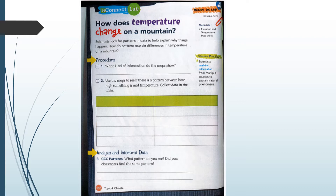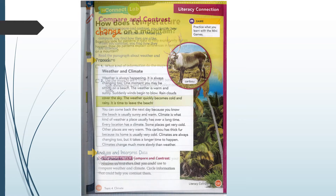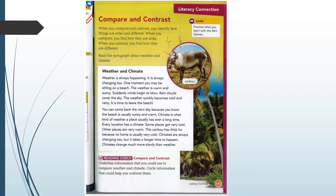Here on page 130 you have an optional connect lab. The question you will find the answer to says: how does temperature change on a mountain? If you are interested, this is something you can do at home. Even though we're learning about science, this is an example of how science ties into what you're learning in reading — specifically how to compare and contrast, which is something we're going to work on a little bit down the road.